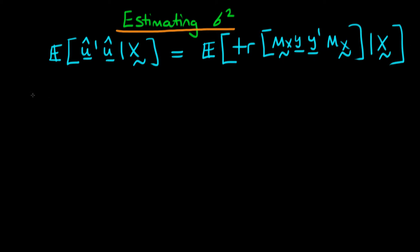And working on this right hand side a bit further, we know that the trace operator and the expectations operator are both unaffected by order. So essentially what we can do is we can just take the trace of now having the expected value of mx times y times y primed times mx.